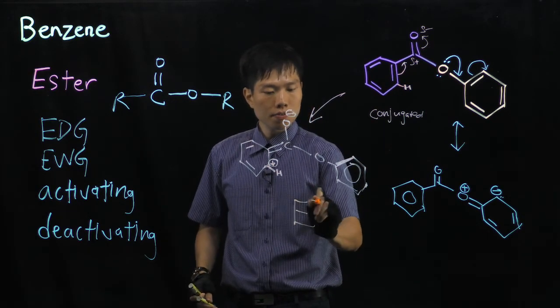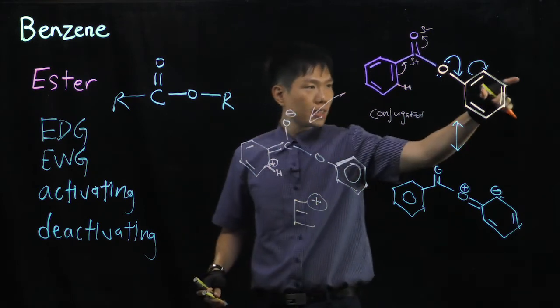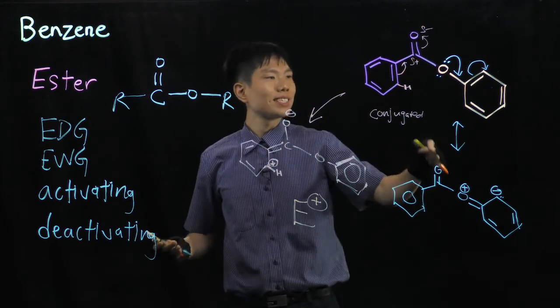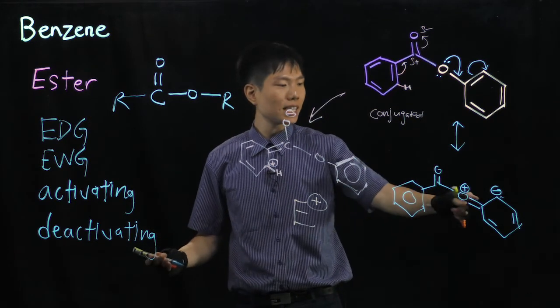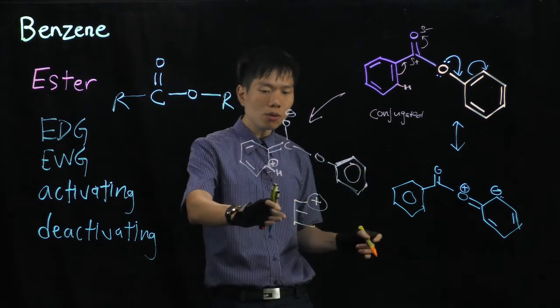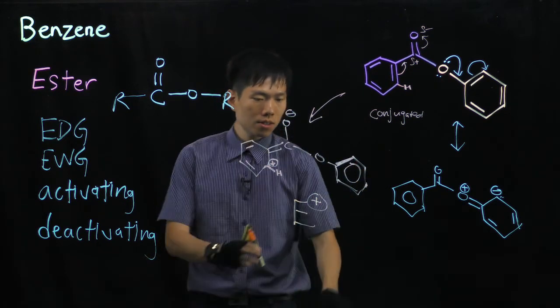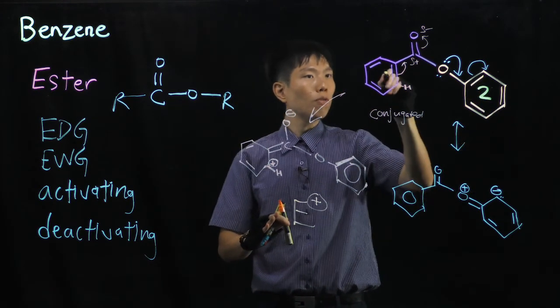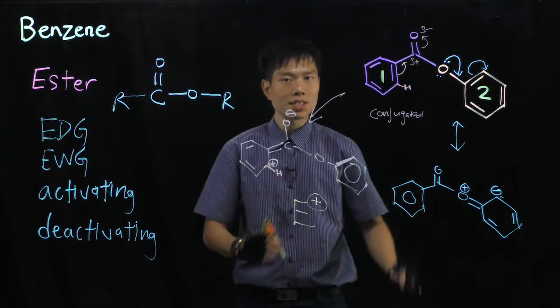But if this benzene ring is directly connected to the oxygen of the ester, then it will be activated because it gains a negative charge. So given the choice, a single electrophile will prefer to go to this ring here, that's called number 2 over 1 due to this reason.